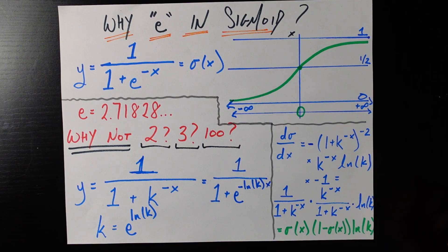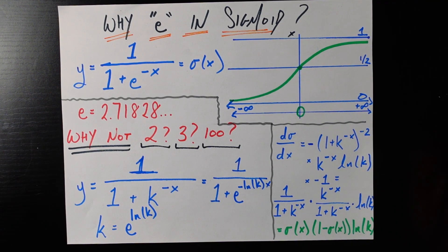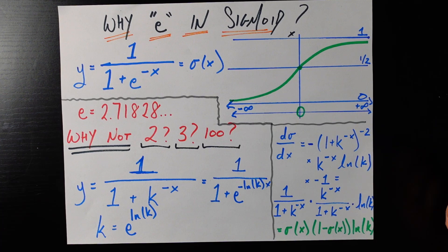Seems like we just made it more complicated but really we've highlighted one of the basic reasons that you can use e or you can use any other number you want and it's not going to change anything substantial about machine learning or the places that the sigmoid is used. If you use any other number k, I will add the caveat it should be bigger than 1 for it to maintain the sigmoid shape.